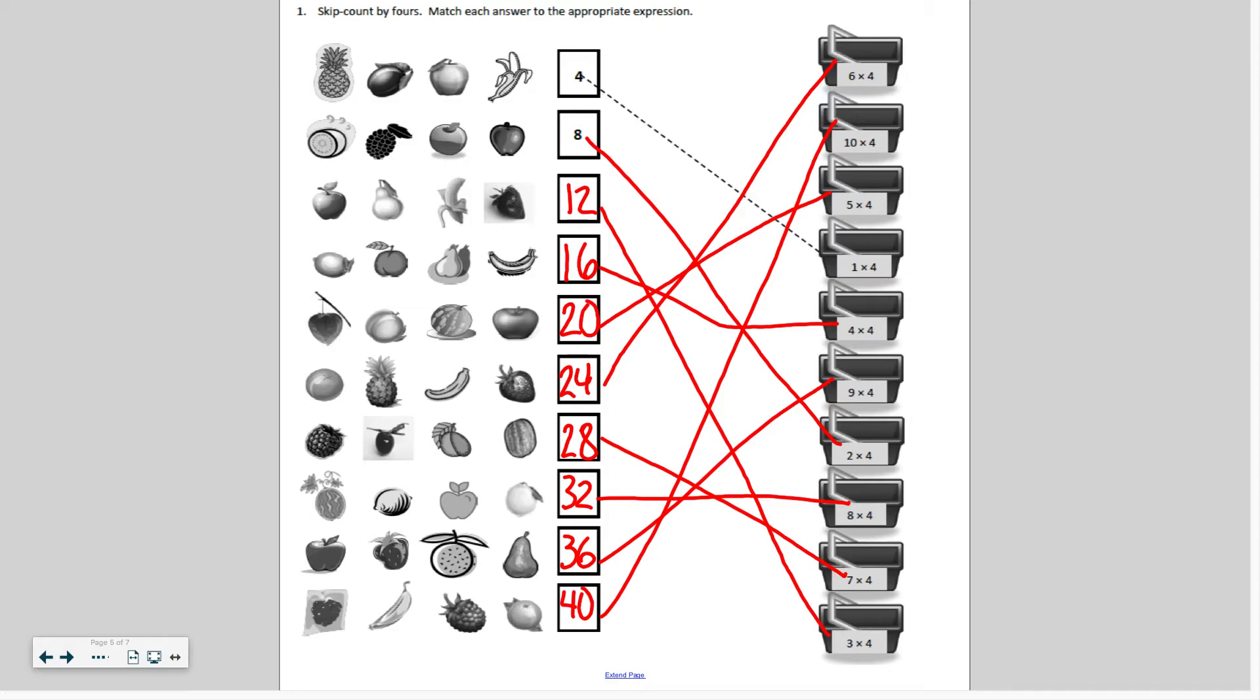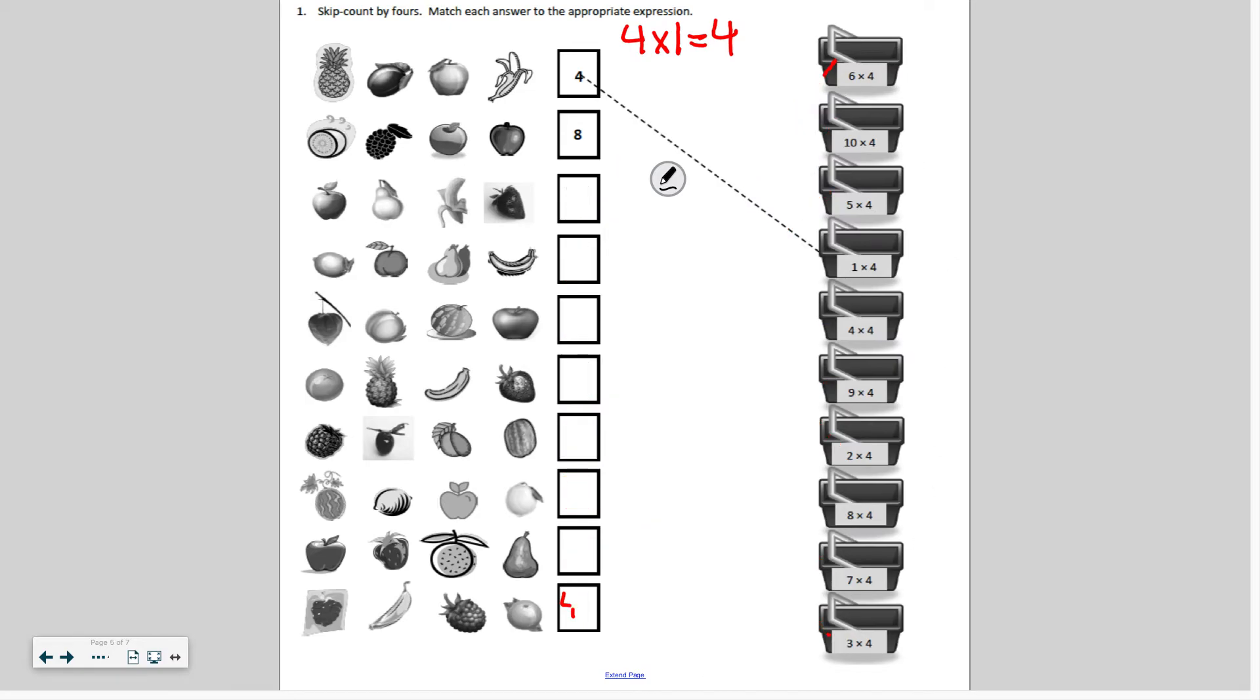So what I want you to do now is grab your notebook or a piece of paper that you have. Because I want you to write down these facts so that you can use them to solve the next problem. So for example, we're going to go in four times one equals four. And I want you to move on from there. So let me give you space to copy this. And then four times two equals eight. And I want you to copy down all these facts.